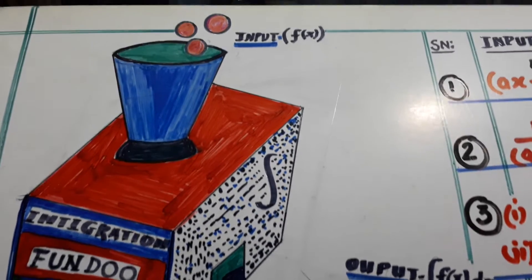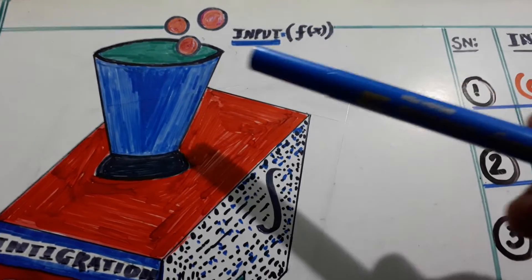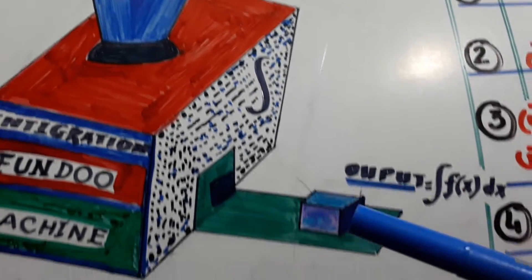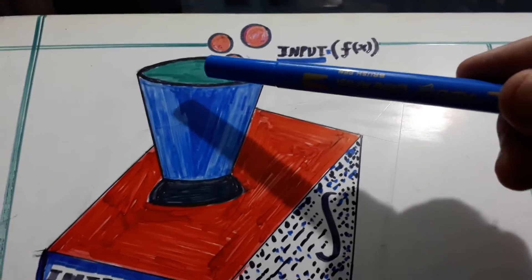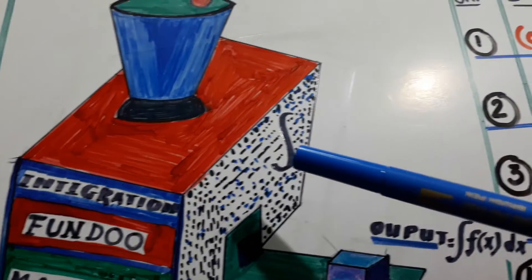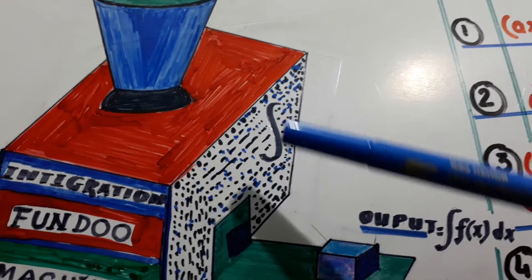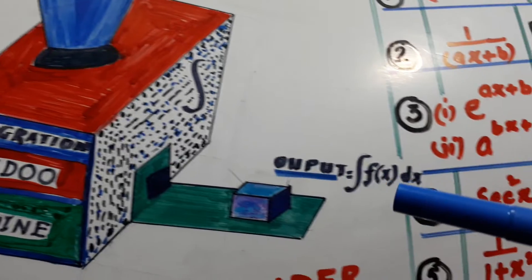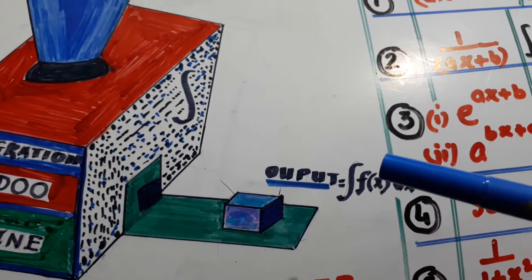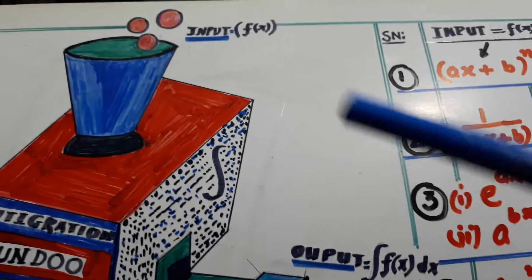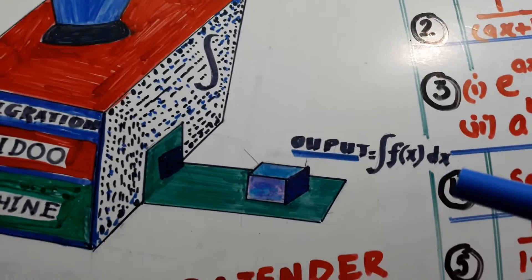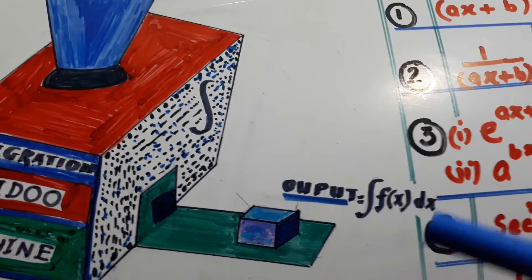Look here, there is an input device and there is an output device. It will be integration of f(x). That is the output. f(x) is going in, integration of f(x).